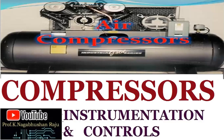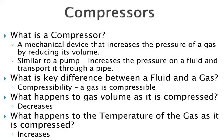Let's discuss today about industrial compressors — the brief process of working of these compressors and the associated aspects of instrumentation and controls. A compressor is a mechanical device that increases the pressure of a gas by reducing its volume. It can be similar to a pump, which also increases the pressure on a fluid and transports it through a pipe, but here it is purely for reducing volume by increasing pressure. Pressurization has a lot of process benefits in process industries.